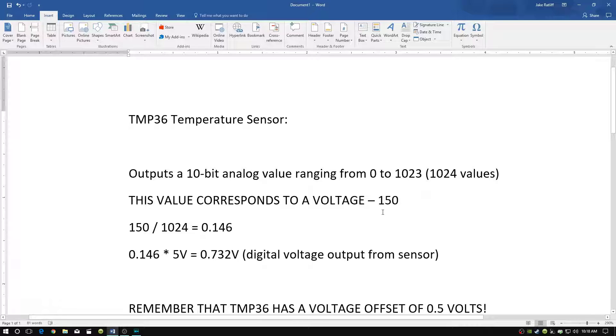So let's say for instance that the number 150 is output to our serial monitor. This is the number that the temperature sensor will output. Well, we need to take this analog value and convert it into a voltage.